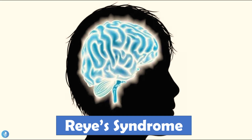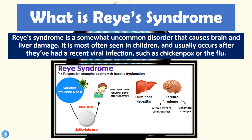Hey guys and welcome to How to Gastro. In today's video we'll be talking about Reye's syndrome. Reye's syndrome is a somewhat uncommon disorder that causes brain and liver damage. It is most often seen in children and usually occurs after they've had a recent viral infection such as chickenpox or the flu.